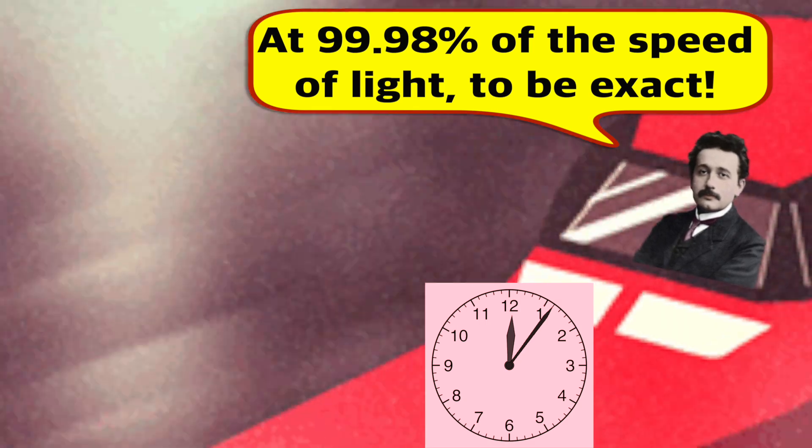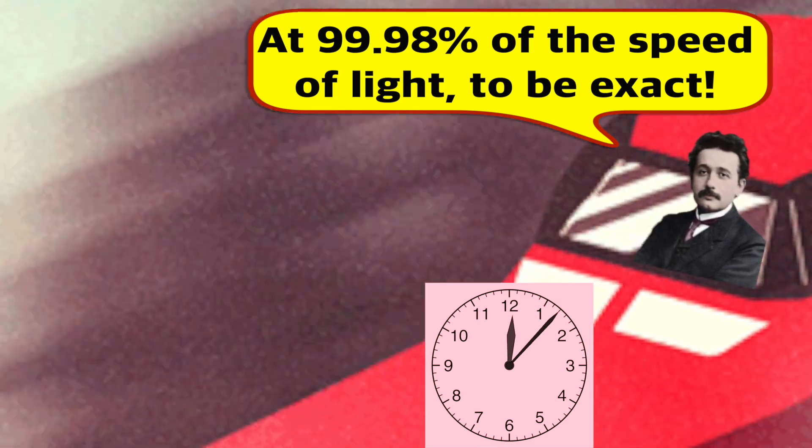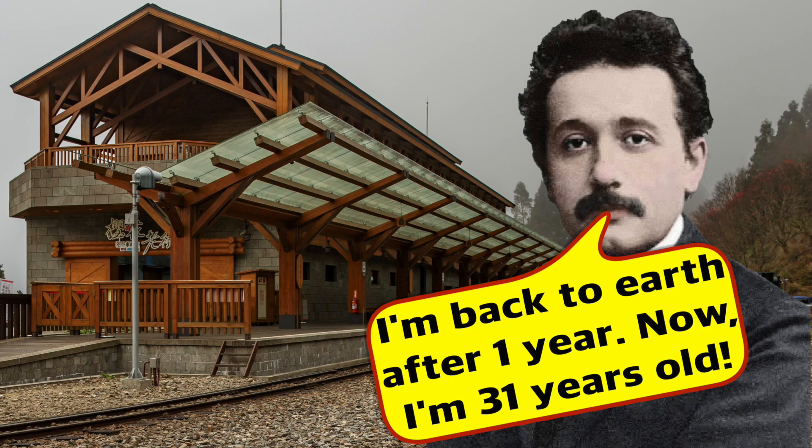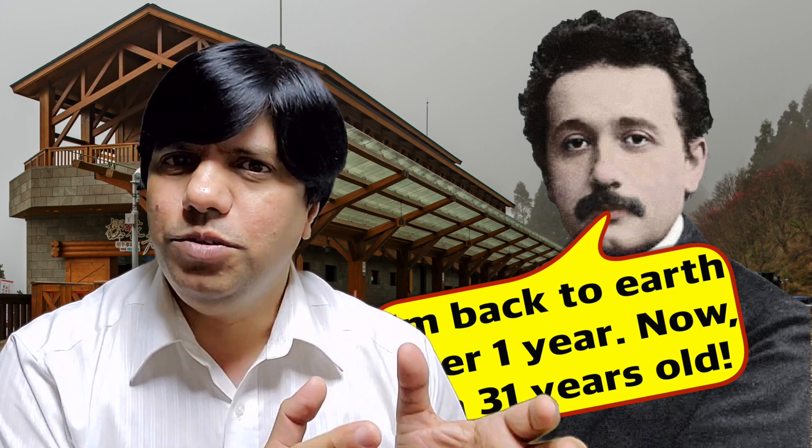So this brother completes his space journey and comes back after one year. After one year he comes back and he is 31 years old. How old do you think his brother would be who stayed on Earth?